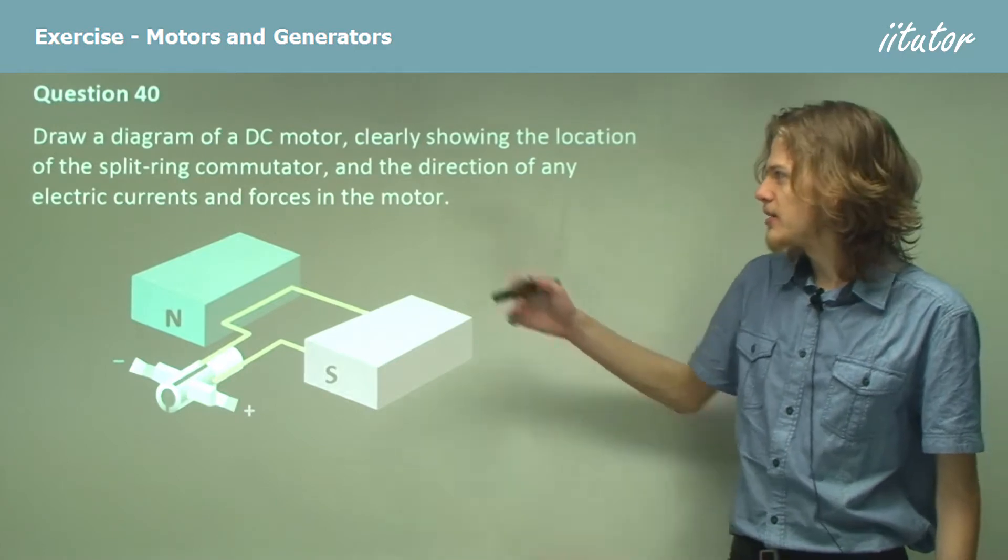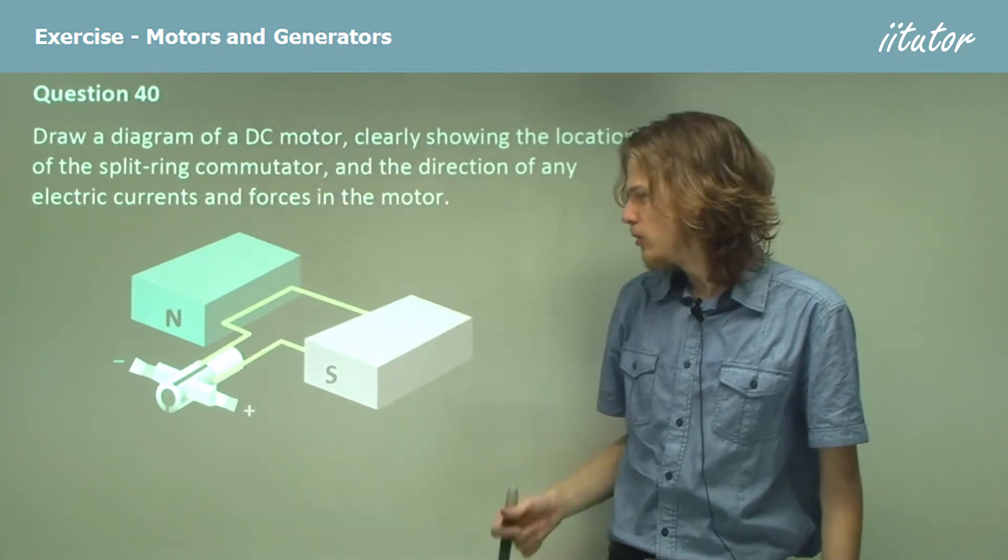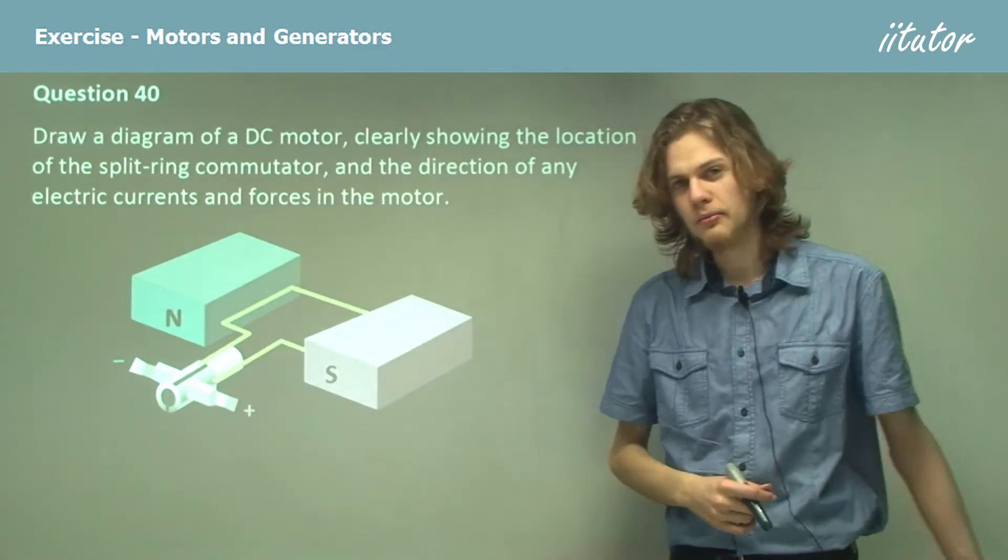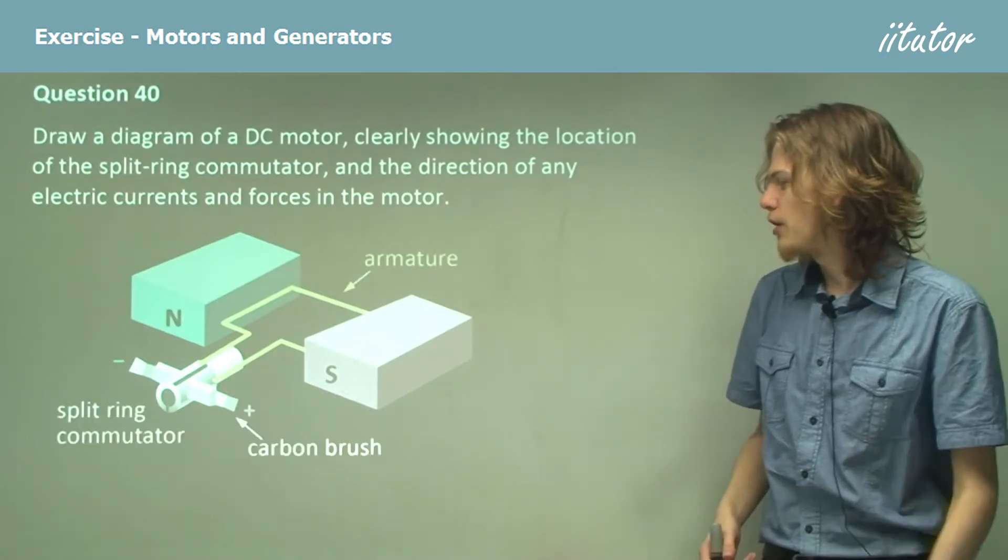Now, what's the location of the split ring commutator? Well, of course it's this thing over here, so we'll label it. And while we're at it, we'll label some of the other parts as well.